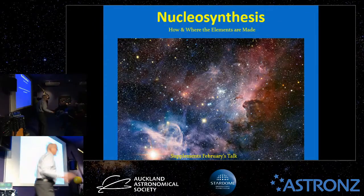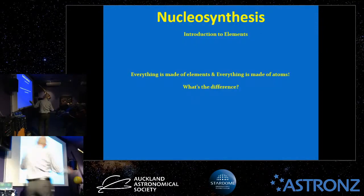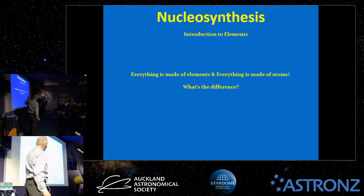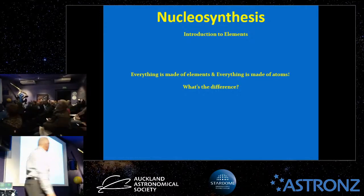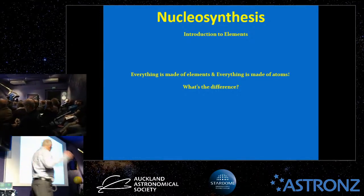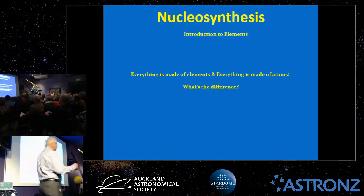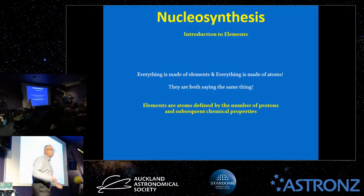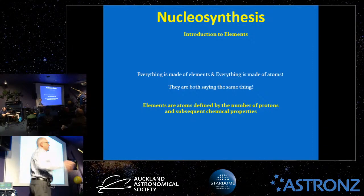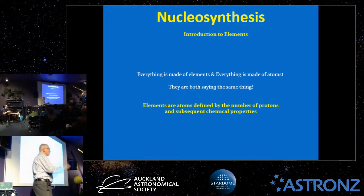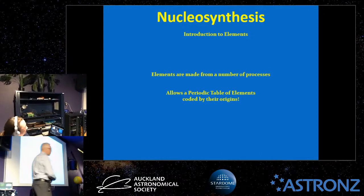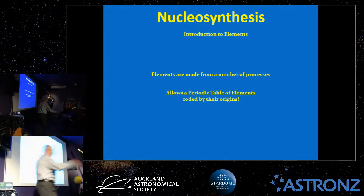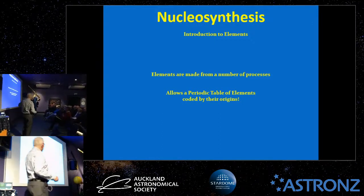A little introduction about what elements are: everything is made of elements and everything is made of atoms — they're saying the same thing. Elements are essentially atoms defined by the number of protons in their central nucleus and their subsequent chemical properties. Every element is just an atom, but you define it by the number of protons. There are a number of processes in the universe that make elements.